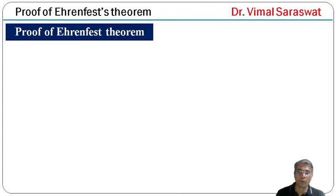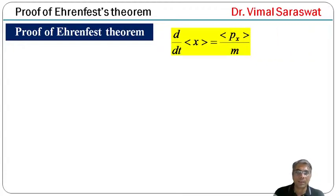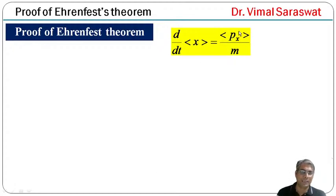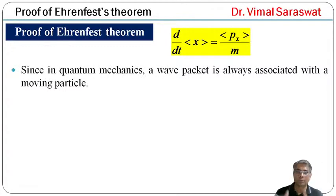Now, proof of Ehrenfest theorem. We need to prove this. So first, d/dt of expectation value of x equals 1 upon m times expectation value of px. X ka expectation value ka samay adarit aukalan, sambeg ke expectation value ka 1 upon m ke barabar hota hai. Since in quantum mechanics, a wave packet is always associated with a moving particle.